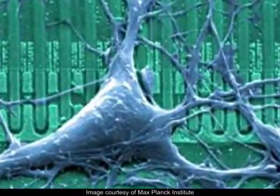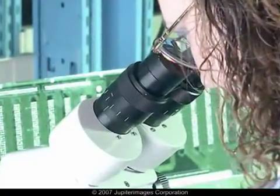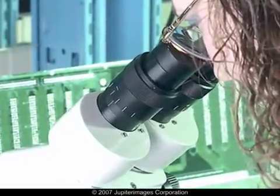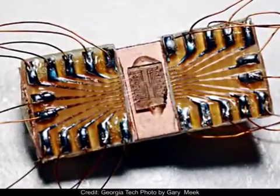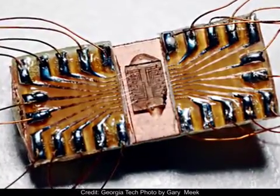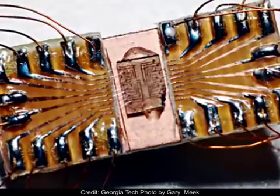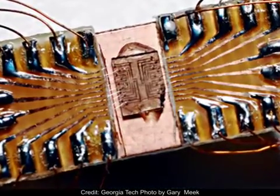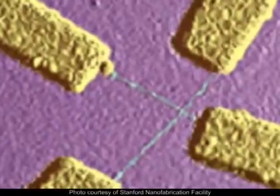But downsizing from the micro to the nanometer level, which is one one-thousandth of a micrometer, produces some unexpected results. Let's take a closer look at what happens to the properties of graphite, another electrical conductor, as we nanosize it to form a carbon nanotube transistor.